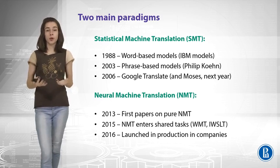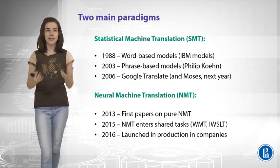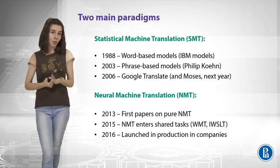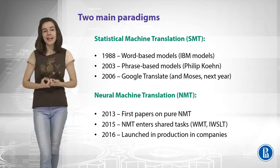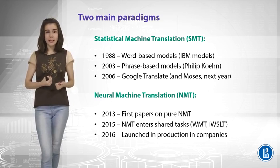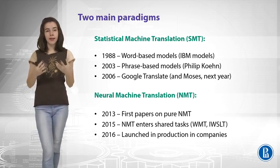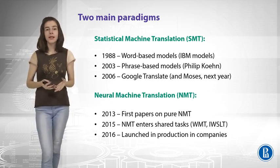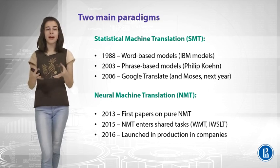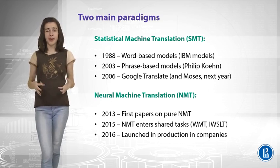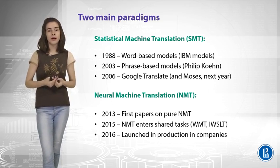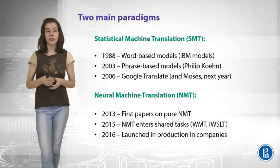The next important step was phrase-based machine translation, proposed by Philip Koehn in 2003 — this is what people usually mean by statistical machine translation today. You probably know Google Translate, but maybe not MOSES: a system that allows researchers to build their own machine translation systems, train models, and compare them. It was made available in 2007.